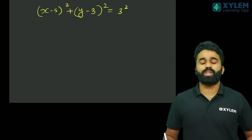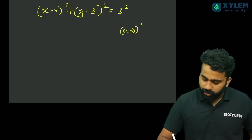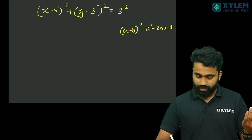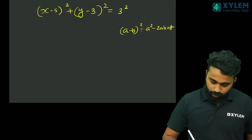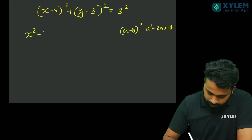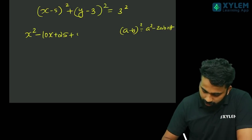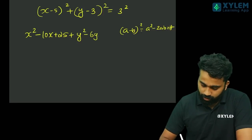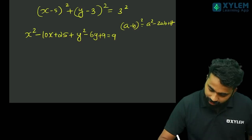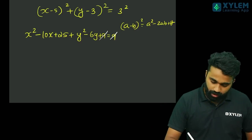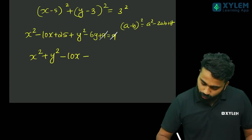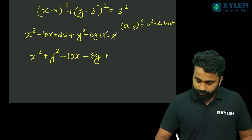...minus 5 all squared plus y minus b, y minus 3 is equal to r squared. Now expanding using (a minus b) squared equals a squared minus 2ab plus b squared: x squared minus 2 times x times 5, that is 2ab, so x squared minus 10x plus 25, plus y squared minus 6y plus 9, equal to r squared.